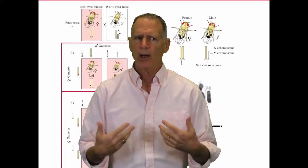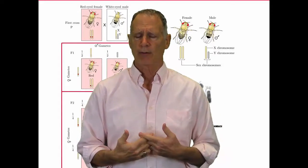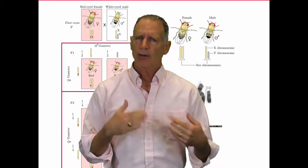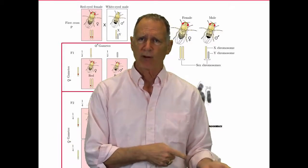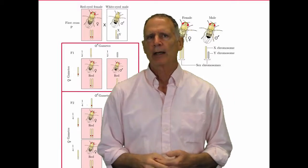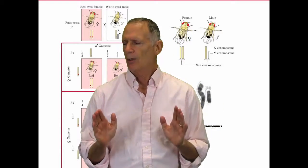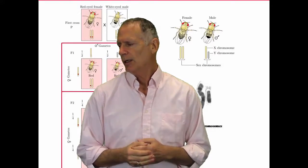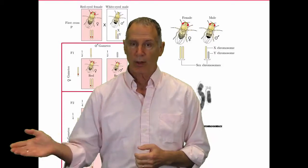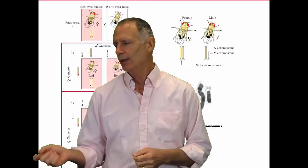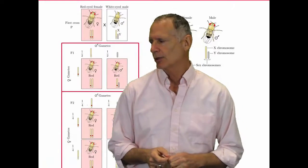These traits were very hard for Morgan to discover at first and to recognize. They'd have to go through thousands of flies to find a trait. We'll talk more about how these traits are generated. But it was not easy in the early going to get and find these traits. That's why it was so important to Morgan to get this white-eyed fly to pass on its trait.